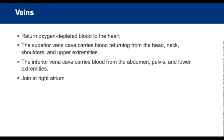Veins carry oxygen-depleted blood back to the heart. They have thinner walls than arteries and are generally larger in diameter. The superior vena cava carries blood returning from the head, neck, shoulders, and upper extremities. The inferior vena cava carries blood from the abdomen, pelvis, and lower extremities. Systemic vascular resistance is the resistance to blood flow within the blood vessels, excluding the pulmonary vessels.